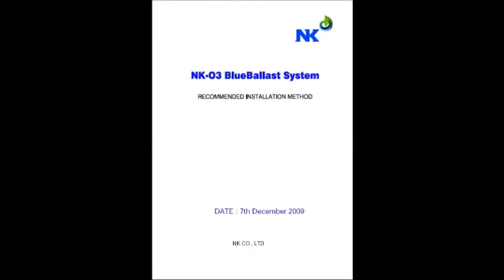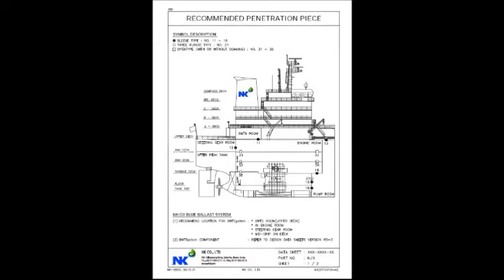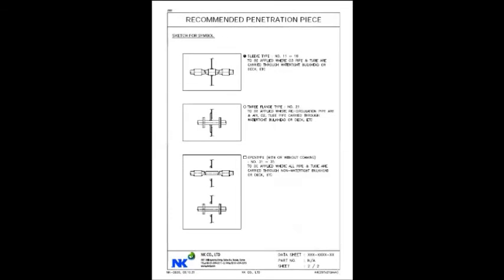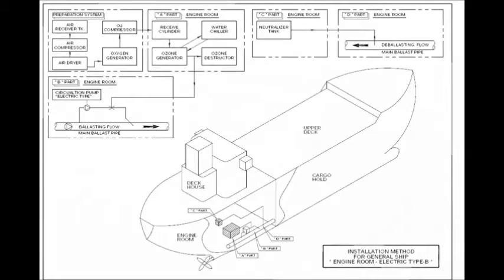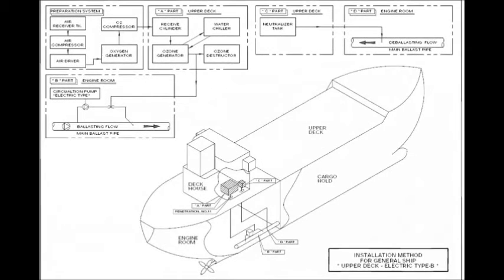The installation of NK03 blue ballast system is so flexible according to the ballast pump location on board. In the tank vessel, if ballast pump is located in pump room, only ejector and nozzle injecting ozone is required to be fitted at ballast pump discharge side and others can be located in engine room or accommodation or on deck as available space. Also, no explosion proof electric materials are requested.